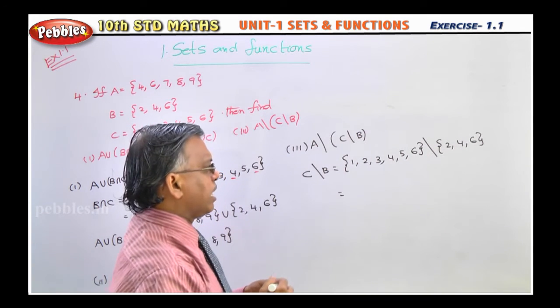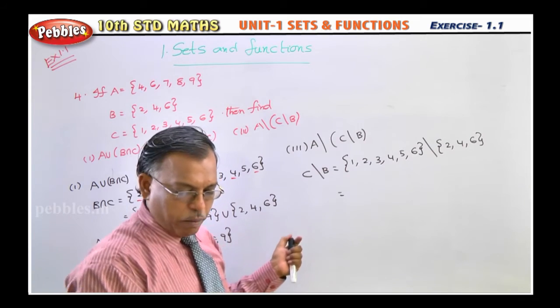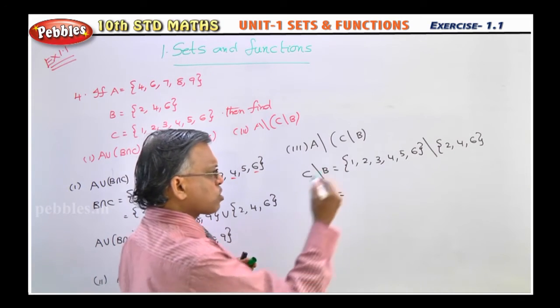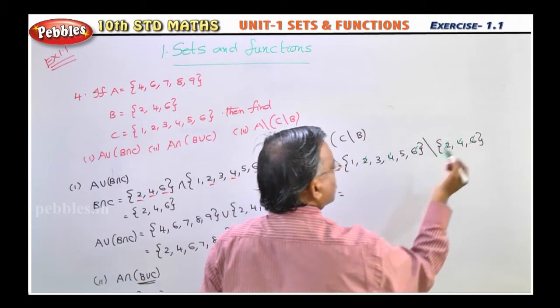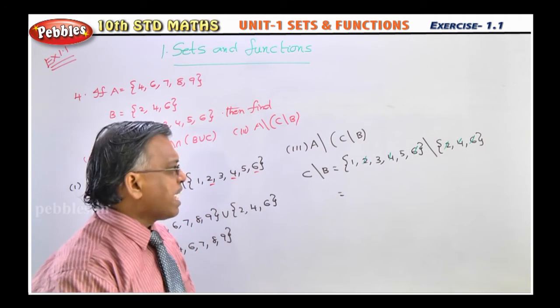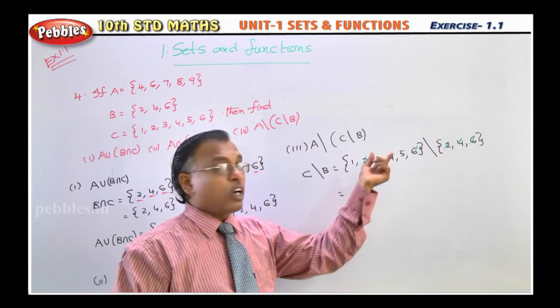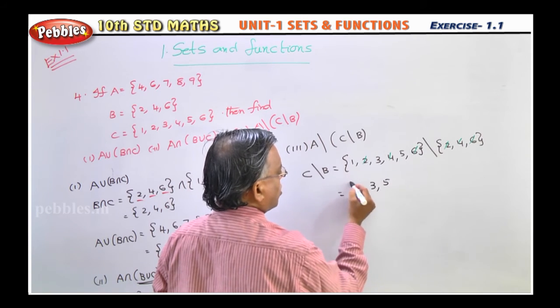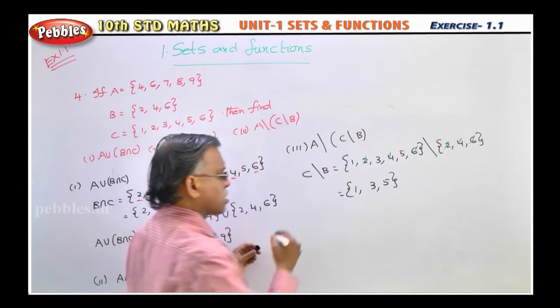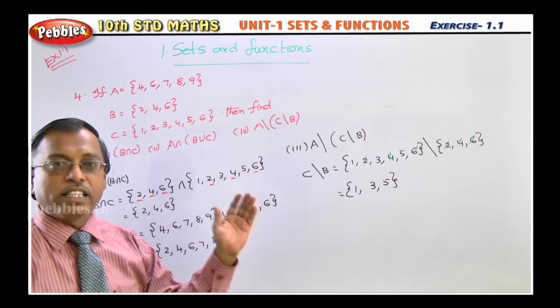Now what is the meaning of this one? The element should be there in C but not in B. So first you strike out the common elements so that you will get the answer very easily. So these are the common elements. So what are the extra elements in C set but not present in B set? Only three elements. What are three elements? 1, 3, 5. So this is your C slash B or C difference B.